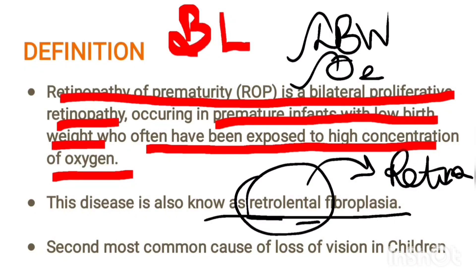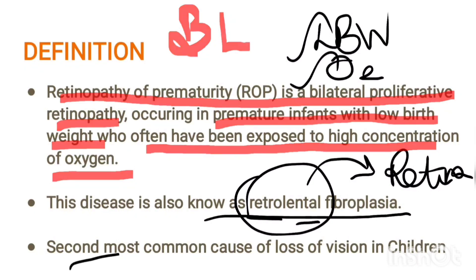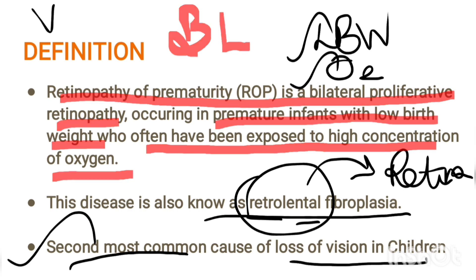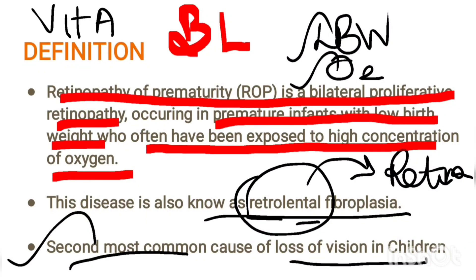ROP is the second most common cause of loss of vision in children. The first most common cause of vision loss in children is Vitamin A deficiency, and the second most common cause is ROP — retinopathy of prematurity.